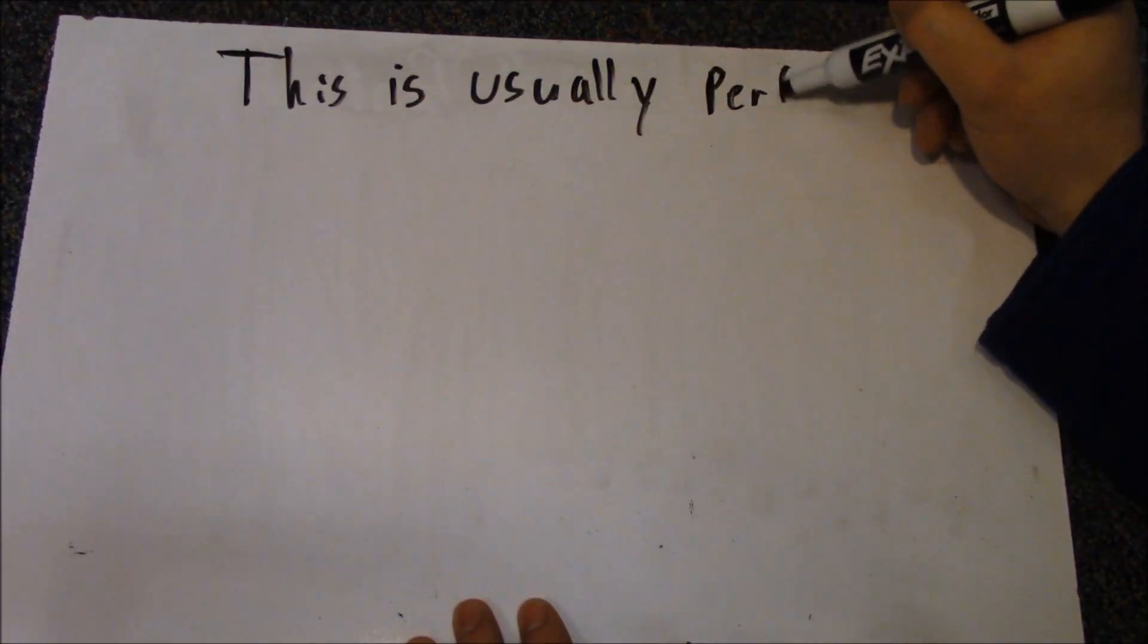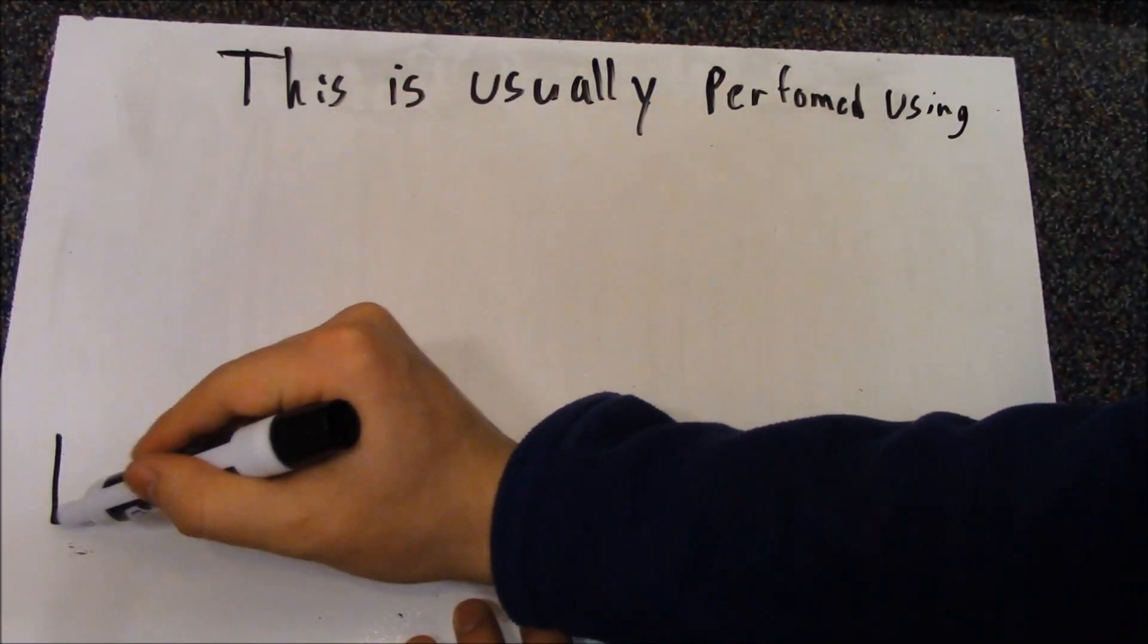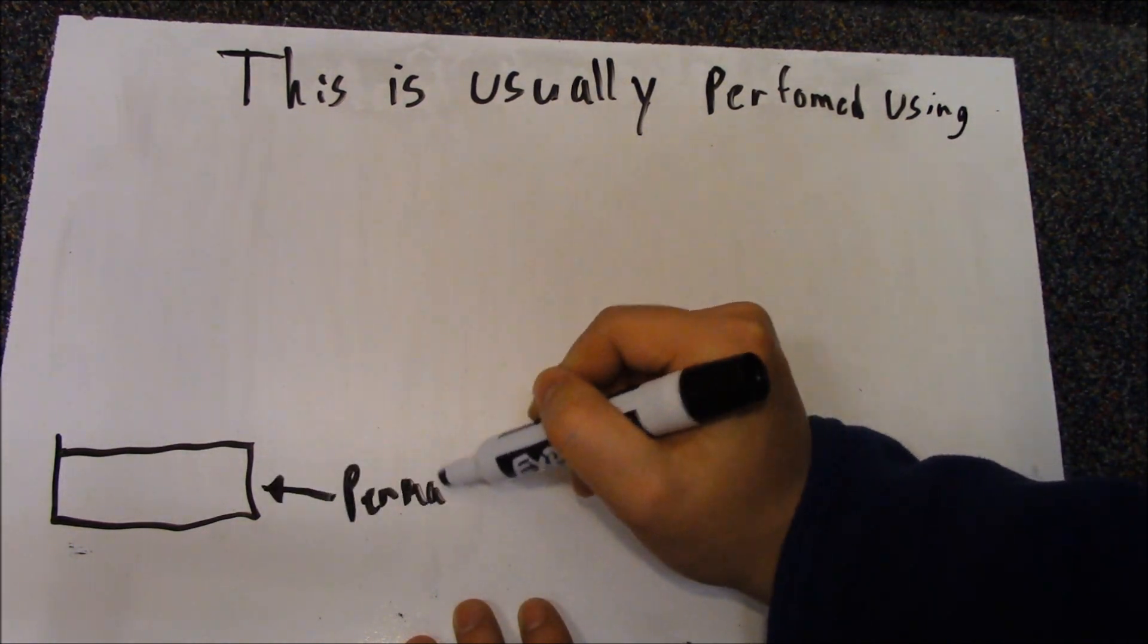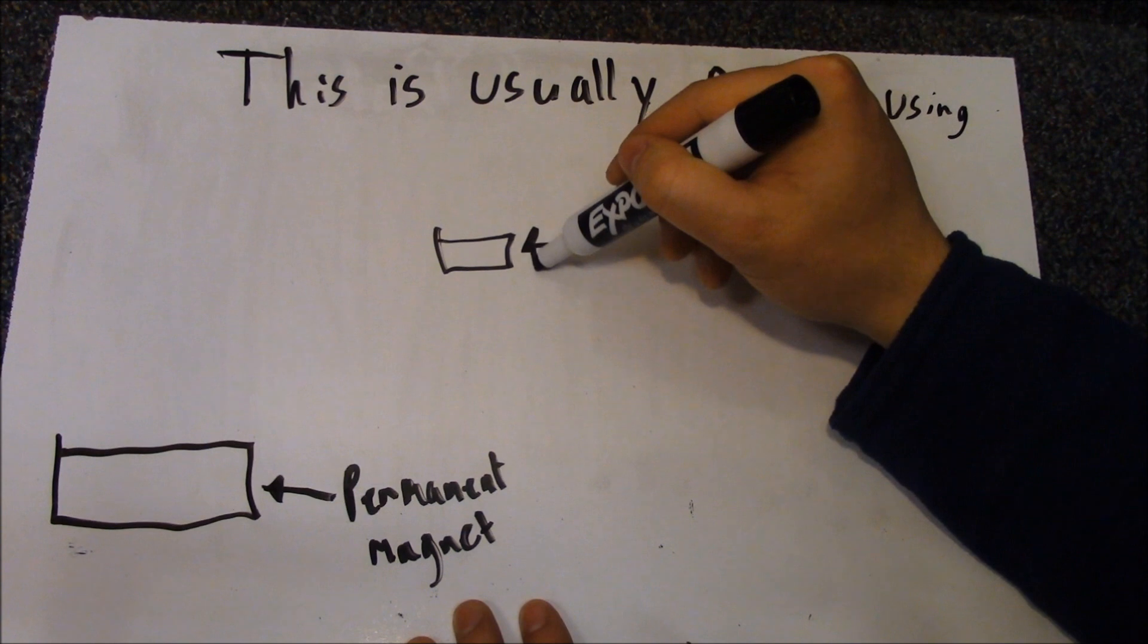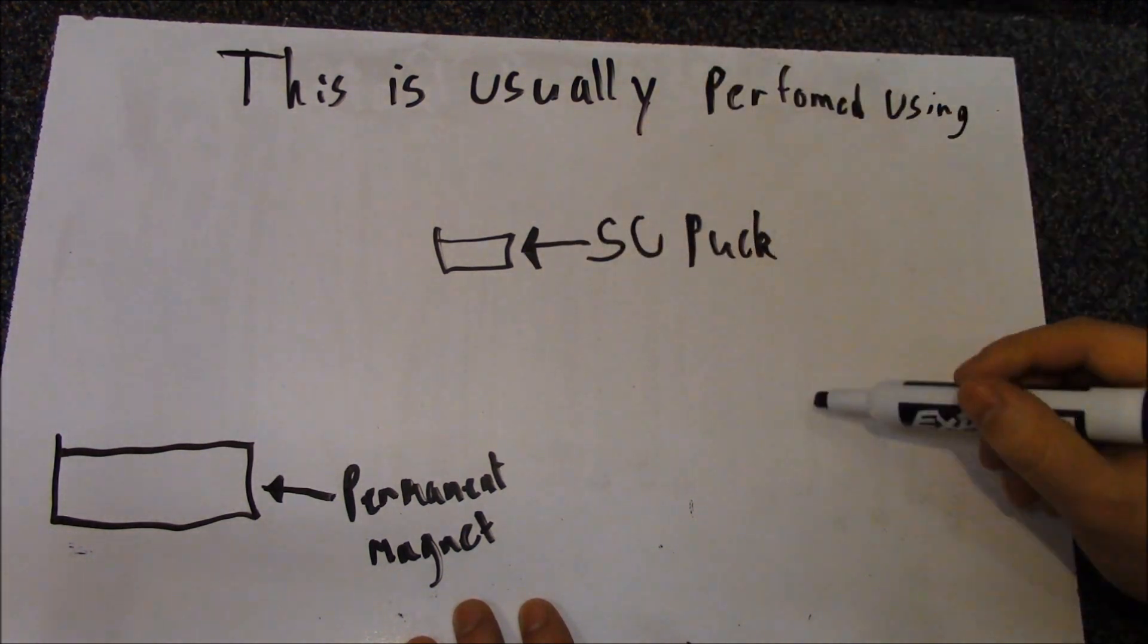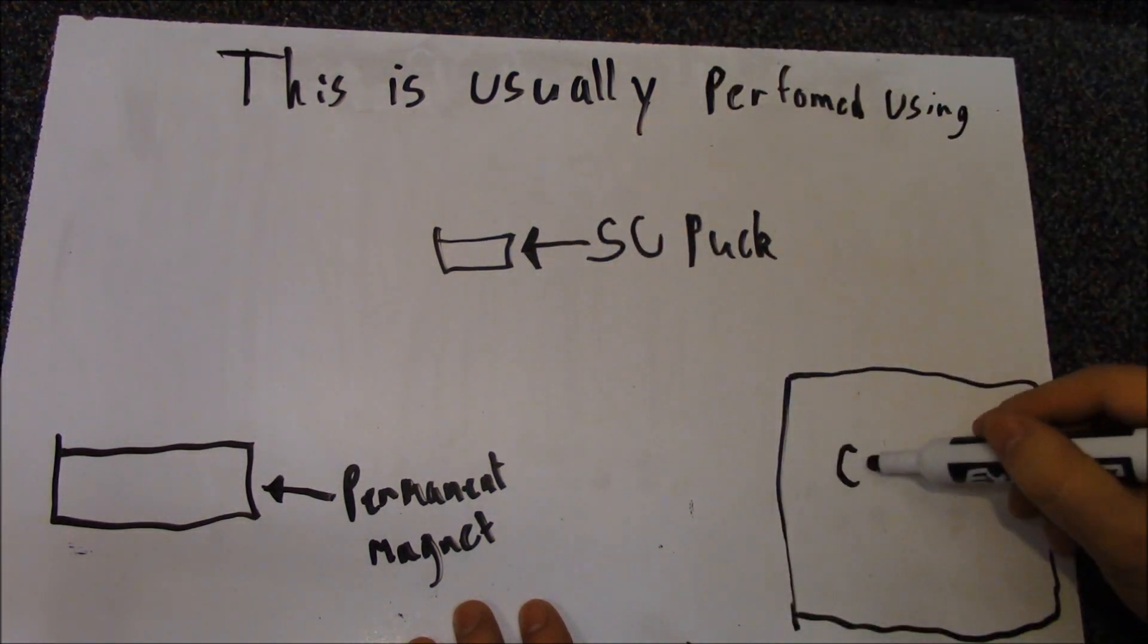However, there is a serious problem with this demonstration. It requires several components: a permanent magnet, an SC puck, and some cryogen to cool the puck.